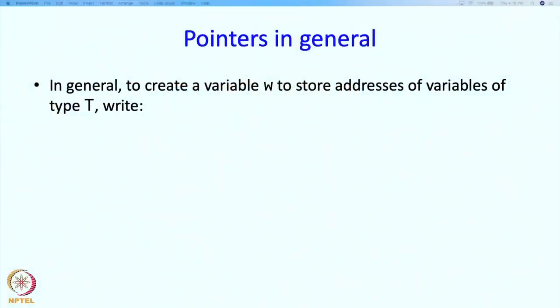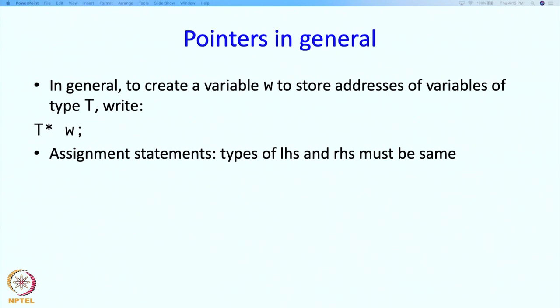In general, we can create pointers to arbitrary types of variables — not just ints, maybe doubles, maybe user-defined types like cars, whatever we want. To create a variable w to store addresses of variables of type t, we write t* w, just as we wrote int* w. So we can write double* w, double* y, or char* x, whatever we want. Assignment statements require that the types of the left-hand side and right-hand side match, so if you have type t* on the left, the right-hand side must also be of type t*.